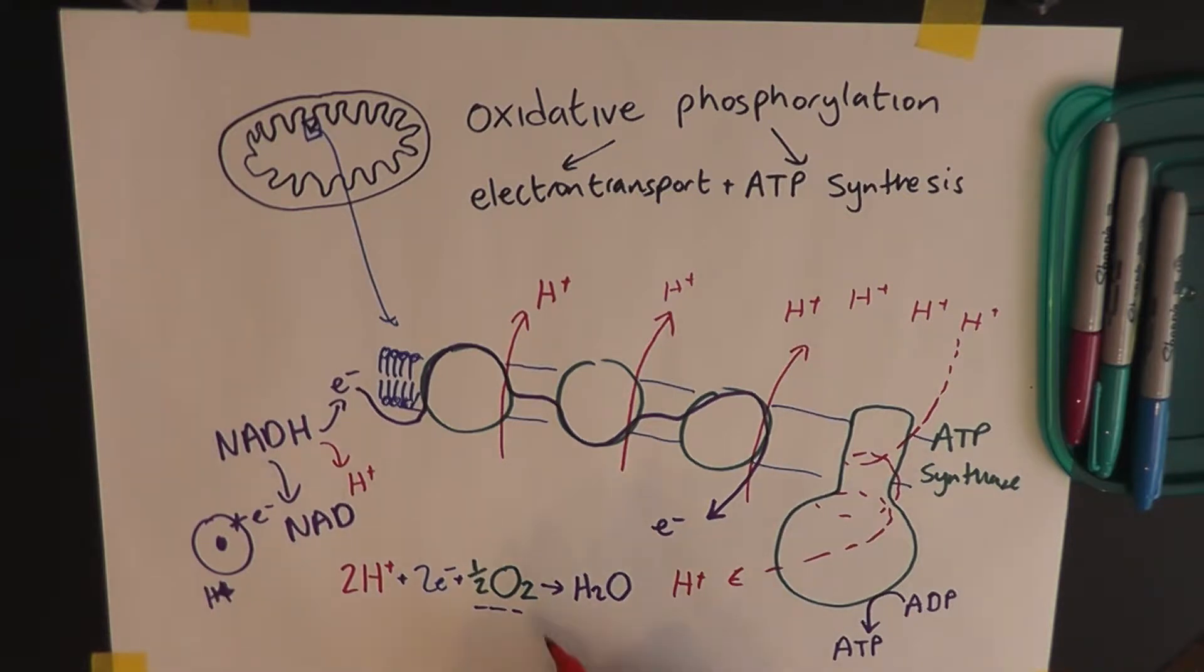And you can see here, we've got oxygen. And that oxygen is used as the final electron acceptor. And what it does is, you join two hydrogen ions to two electrons to half an oxygen to make water. And this oxygen comes from when we breathe it in from the atmosphere.